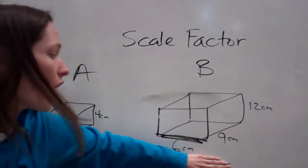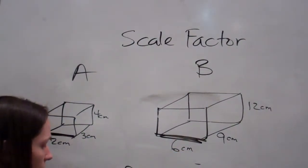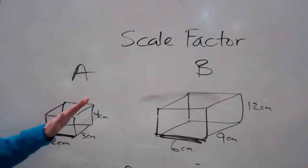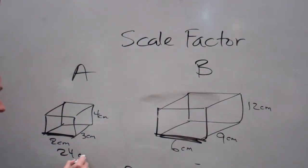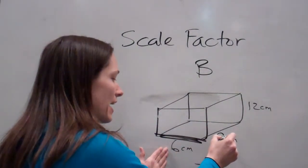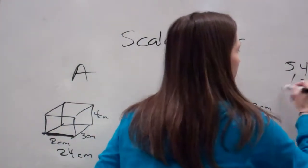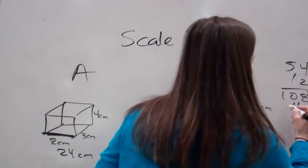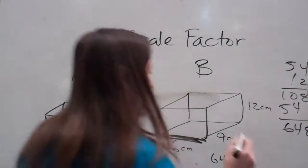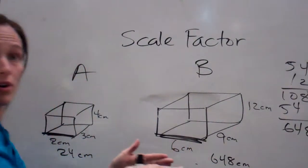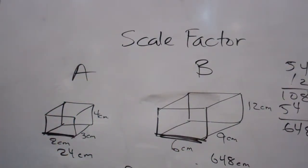Now, let's find the volume. Volume scale factor. Volume is length times width times height. Two times three, six. Six times four, 24 centimeters. This one, six times nine, 54 times 12. 648 centimeters. How much bigger is from here to here? Who knows?